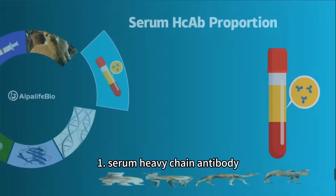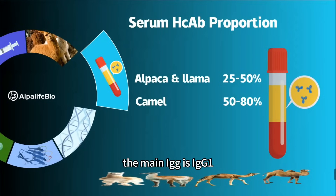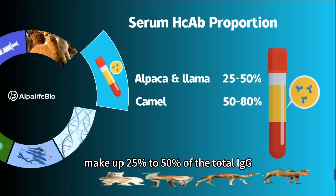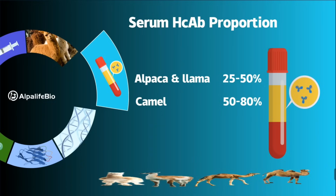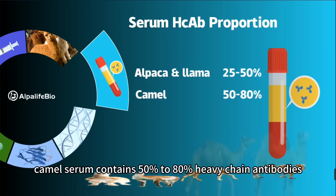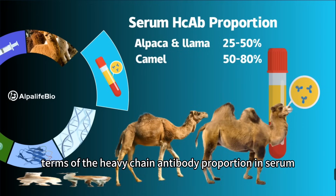1. Serum Heavy Chain Antibody: In the serum of alpacas and llamas, the main IgG is IgG1, which is the conventional antibody. Heavy chain antibodies, IgG2 and IgG3, make up 25% to 50% of the total IgG. In contrast, camel serum contains 50% to 80% heavy chain antibodies. Therefore, camels have a clear advantage in terms of the heavy chain antibody proportion in serum.